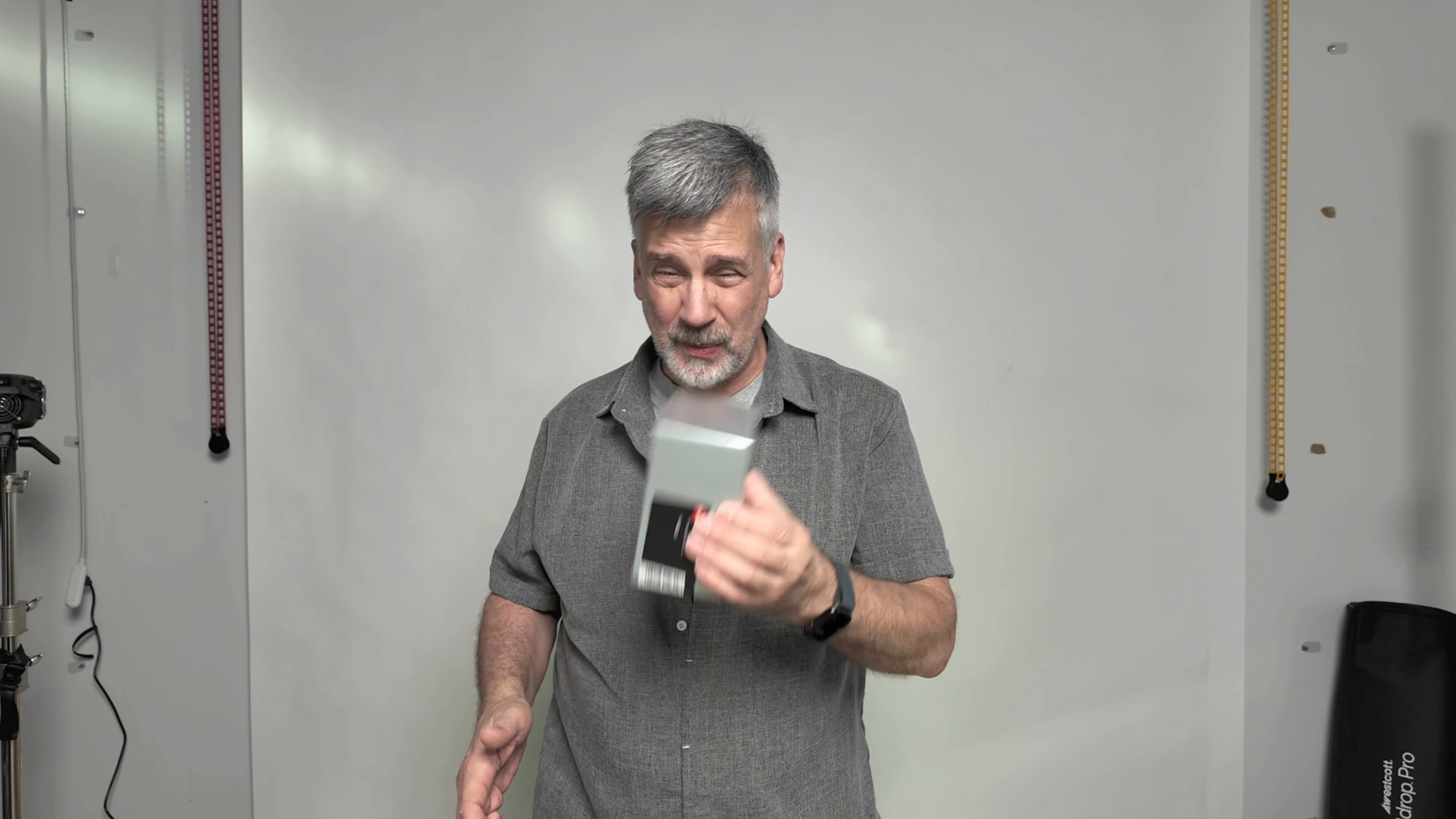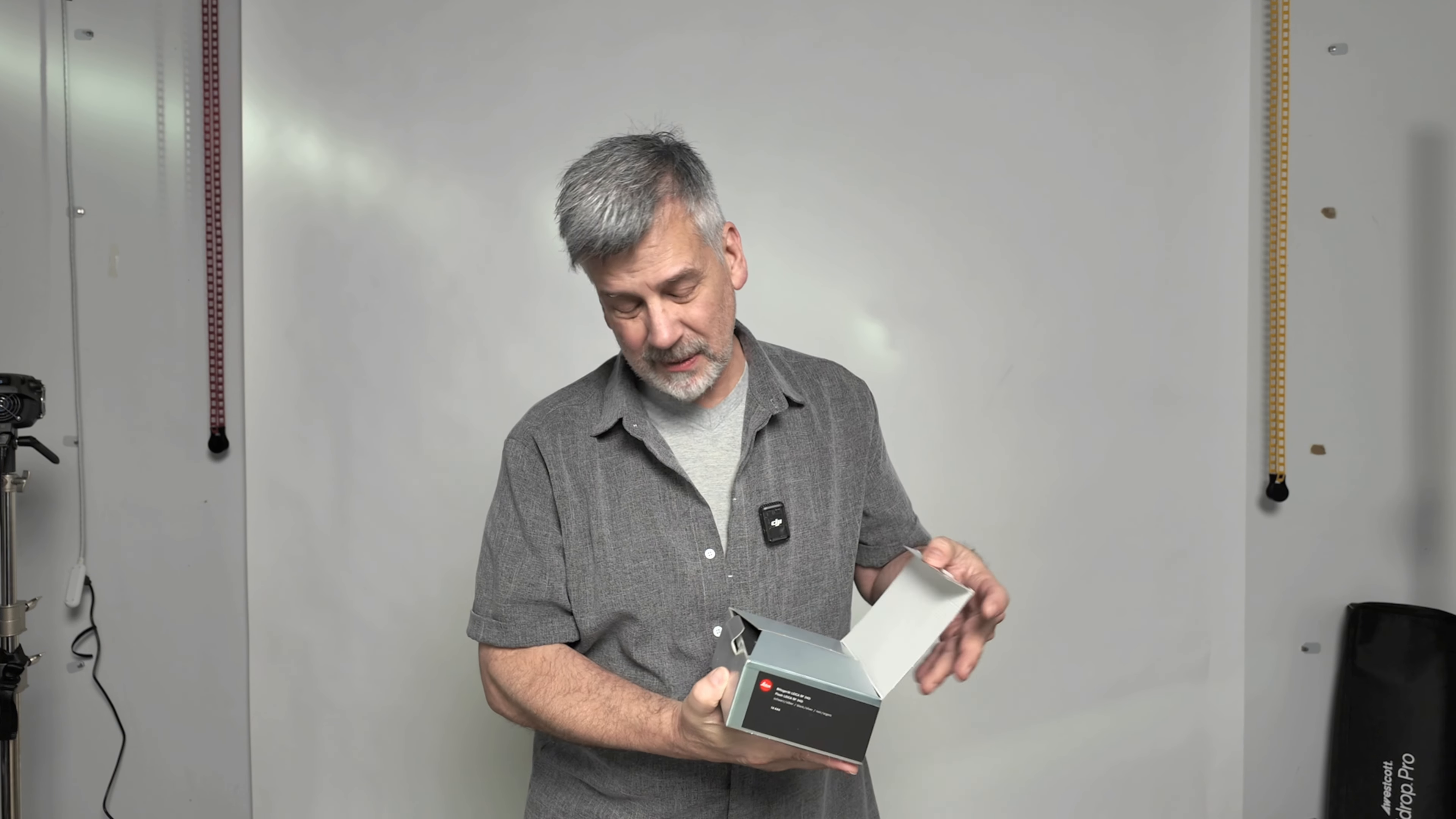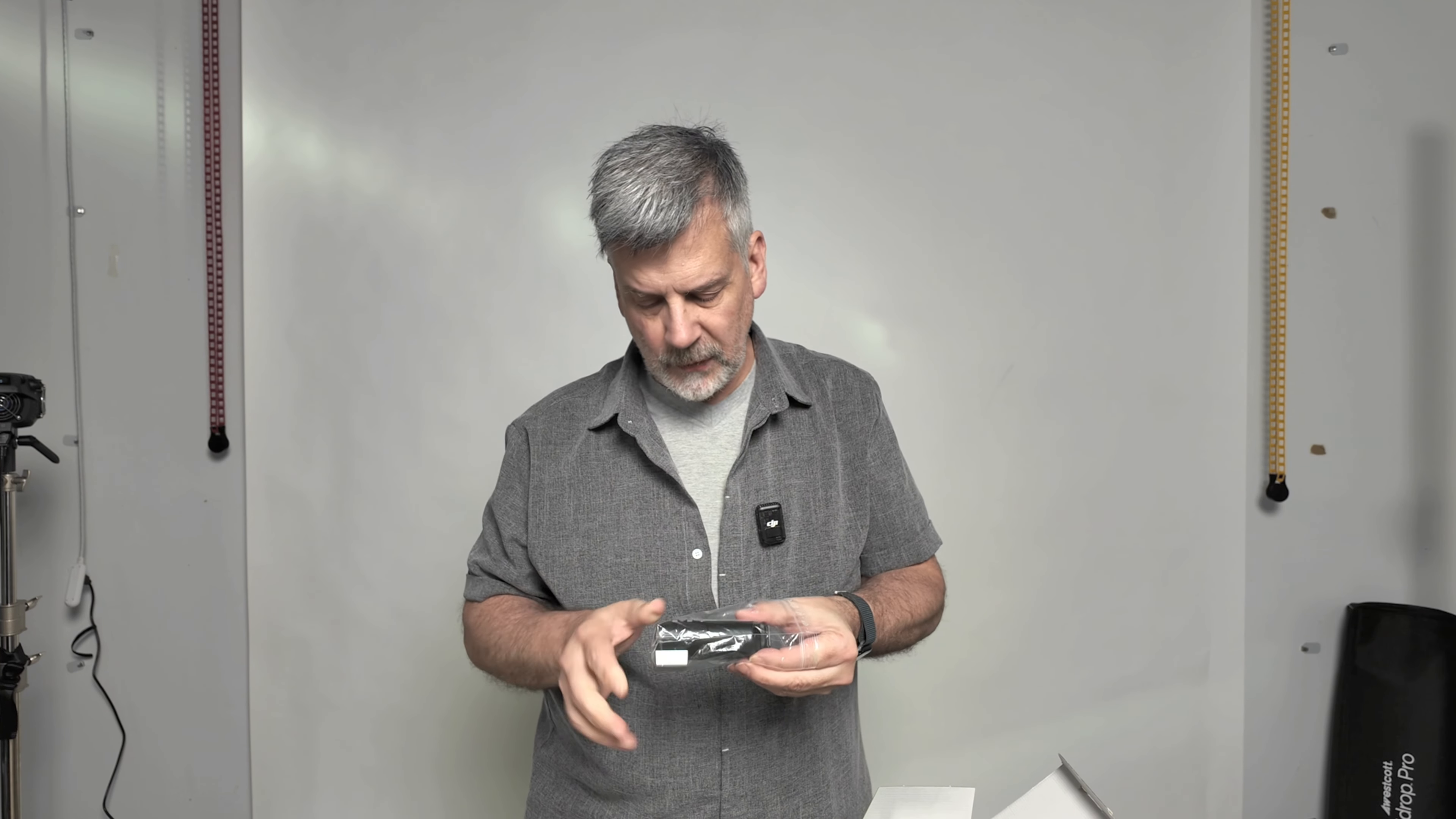The next one is the SF24D. Everybody wants this one. I have too many. This comes with everything: instruction manuals, the flash. It does have the diffuser in it. This is a really nice unit in perfect working condition.